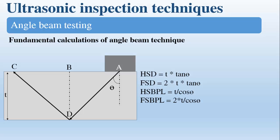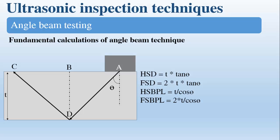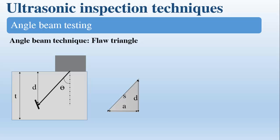And here we will present the calculations you need to locate the flaw. Here is the specimen of thickness T with a flaw, and we have the probe of angle theta. So we can draw the flaw triangle as you can see here.